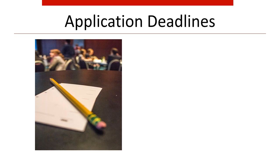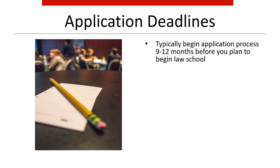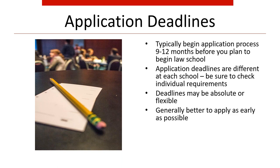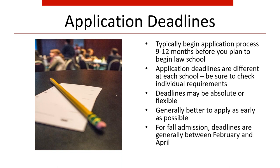Regarding application deadlines: you'll want to begin your application process 9 to 12 months before you plan to begin law school. The deadlines are different at each school, so be sure to check individual school requirements. The deadlines may be absolute or flexible, and it's generally better to apply as early as possible. For fall admission, deadlines are generally between February and April.